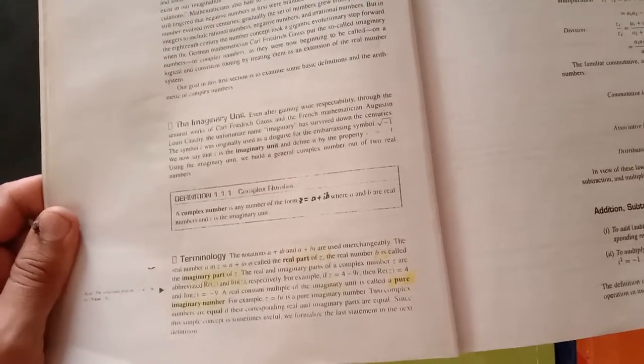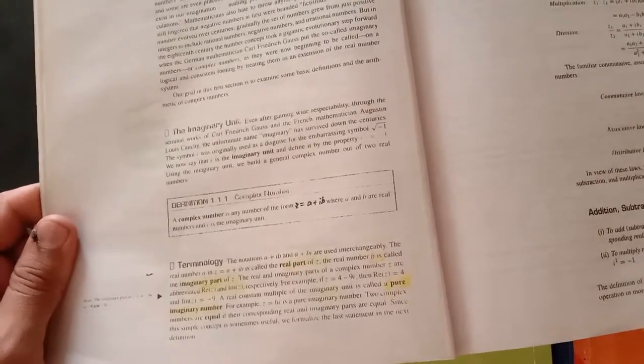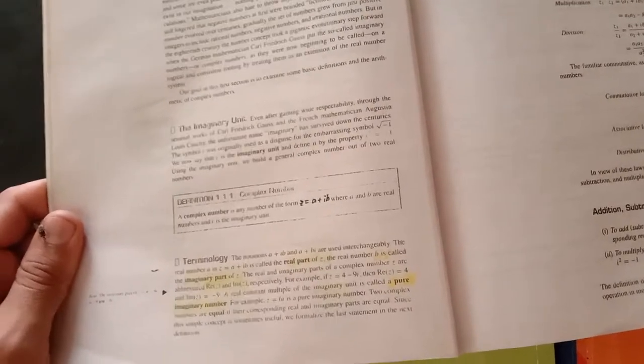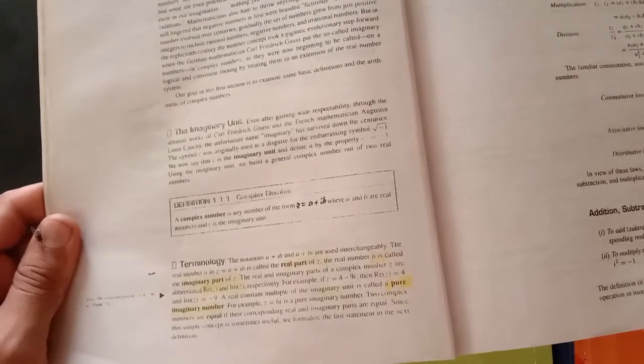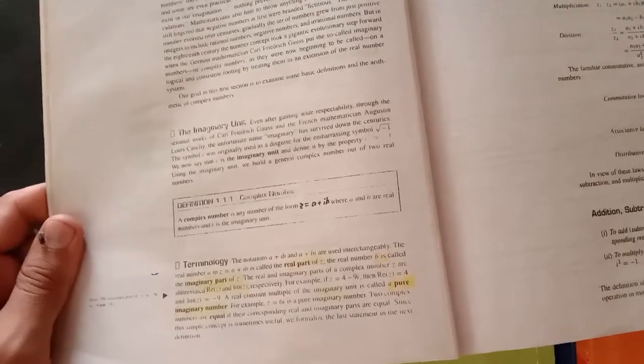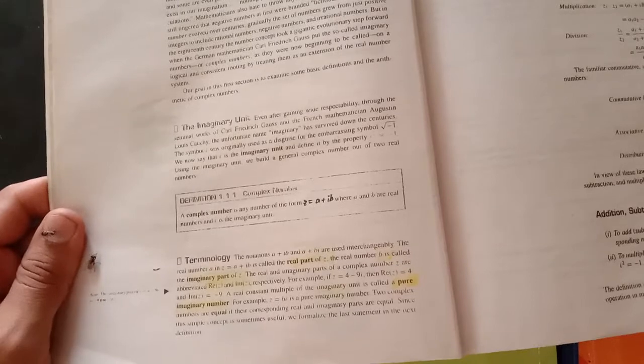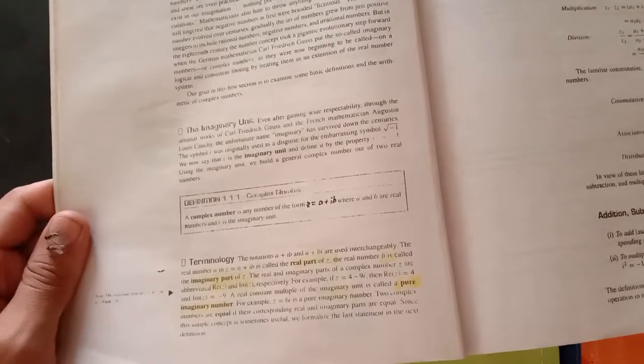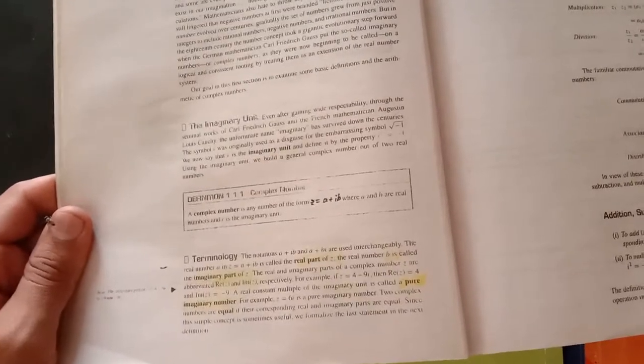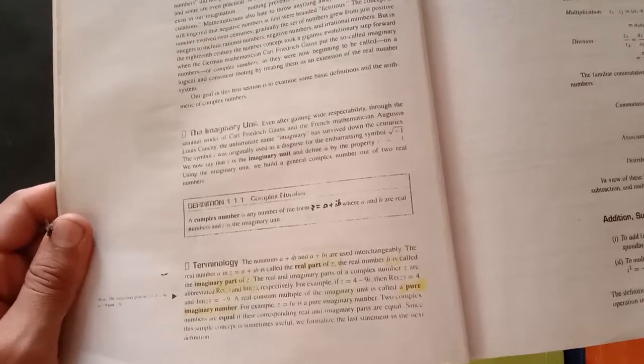Real part of the complex number, abbreviation mein ham kis tarah abbreviate karte hain RE(Z). RE(Z) ka matlab hai ke imaginary or real parts ke notation ham kis tarah abbreviate karte hain - IM of Z.